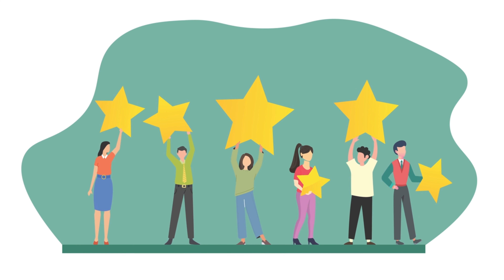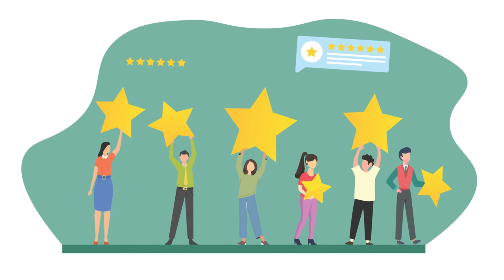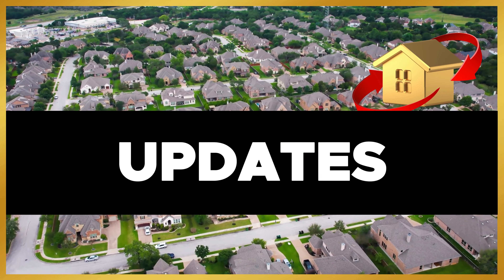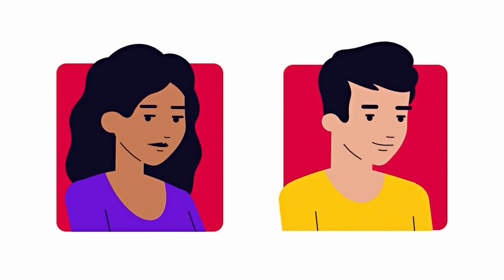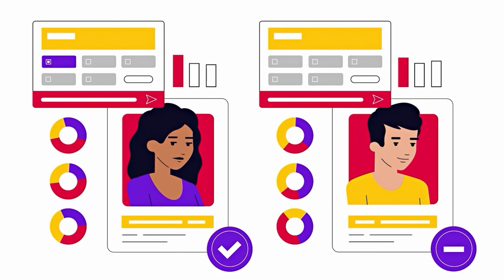Include specific details about the types of properties you specialize in or areas you serve. Step five: endorsements and recommendations. Request recommendations and testimonials from satisfied clients who can vouch for the quality of service you provide, and display endorsements from colleagues or industry professionals who can validate your expertise.